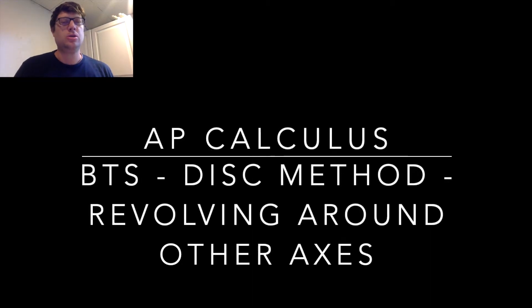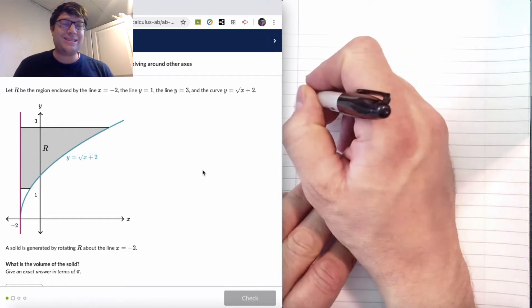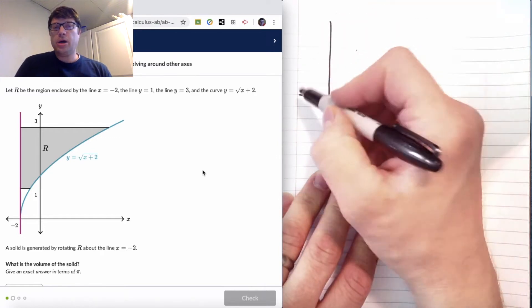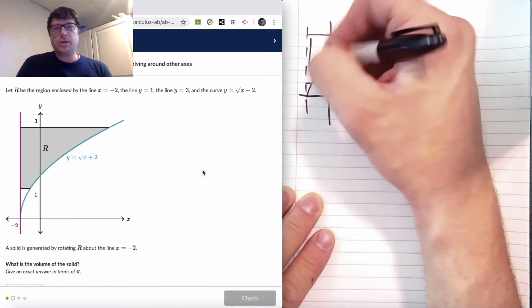What's up guys? This is a behind-the-scenes look at the rest of those questions from the disc method where we revolve around axes other than X and Y. I just wanted to continue to show what's going on here to kind of show what I'm thinking through getting towards those expectations.